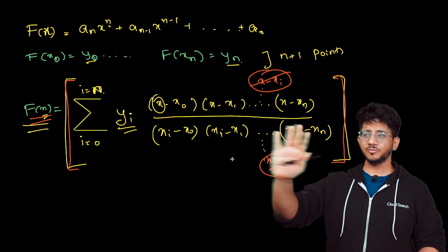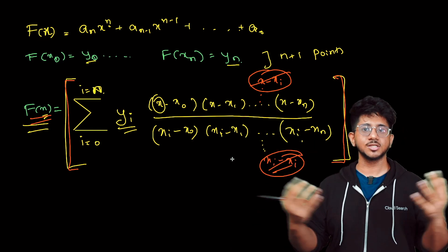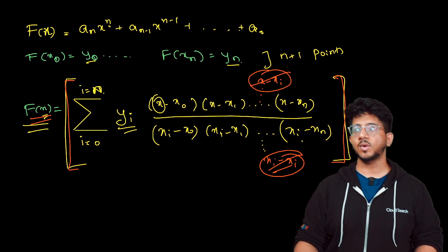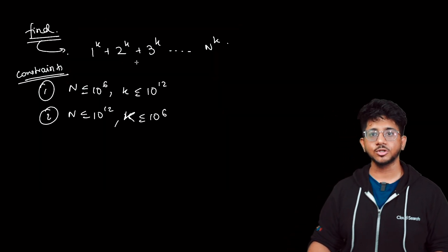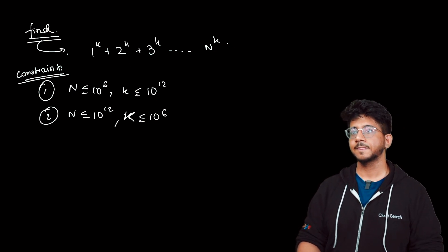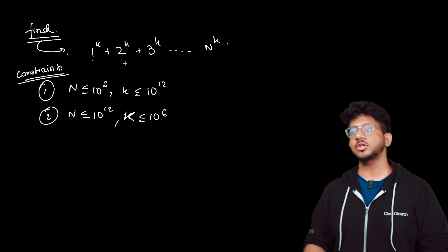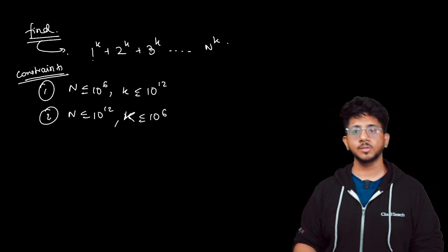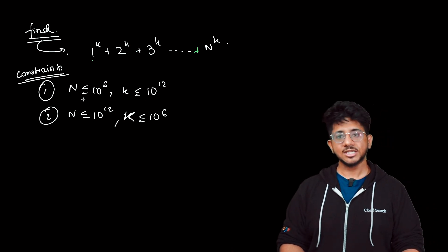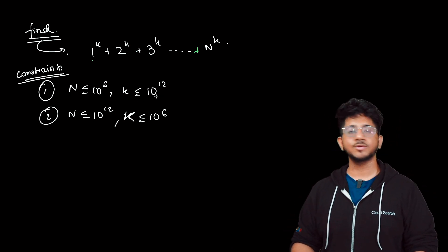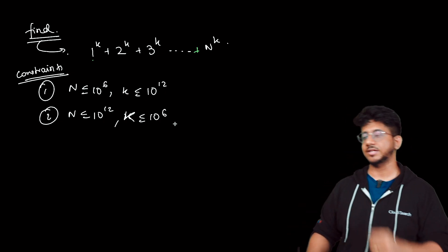We don't need so much formula — we need to see how we can use this in solving problems. The question we have is: find 1^k + 2^k + 3^k + ... + n^k for different constraints. Constraint one: n is up to 10⁶, k is up to 12. Constraint two: n is up to 12, k is up to 10⁶. How do you find this?